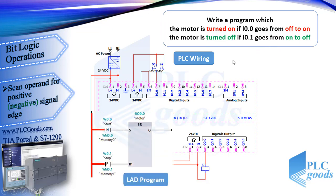This is my program with the SR flip-flop. To turn on the output I use the instruction which scans I 0.0 for negative signal edge. I 0.0 is connected to the start pushbutton. Now let's see how this line works.